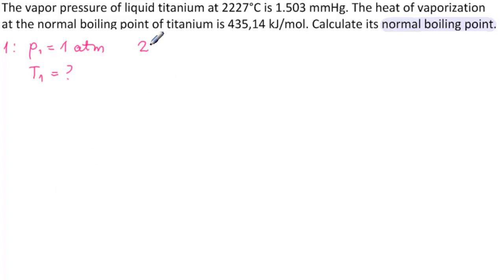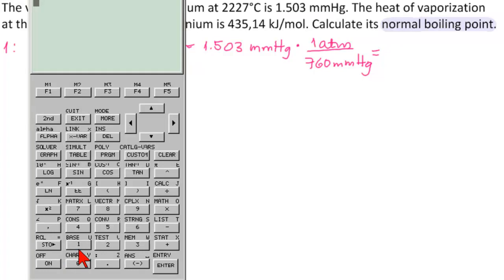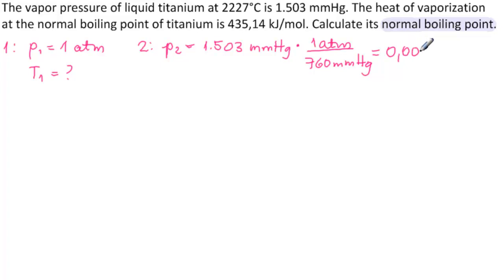And then for level two, P2 equals 1.503 millimeters mercury, which we need to convert into atmospheres. So we multiply it by 1 atmosphere over 760 millimeters mercury. Using the calculator, 1.503 divided by 760 equals 0.0019777 atmospheres.